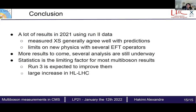In conclusion: it is a very active field. Many new results in 2021 using the full Run 2 data — measured cross-sections generally agree well with prediction and allow new constraints on new physics with several EFT operators. Many more results are still to come. Statistics are the limiting factor for most multiboson results, and Run 3 and the High-Luminosity LHC will significantly improve them.